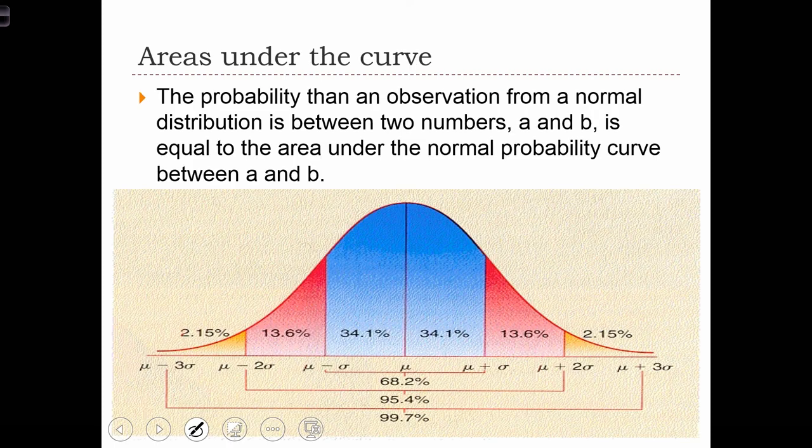With the normal distribution, we are going to look at the area under the curve to determine different probabilities. In particular, the probability that an observation from a normal distribution is between two numbers, we'll call those numbers A and B, is equal to the area under the normal probability curve between A and B.